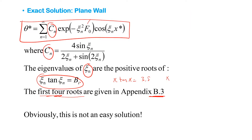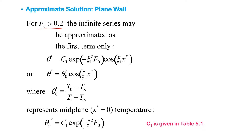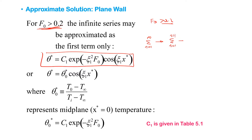Going back to the full solution: T-star is the normalized time and x-star is the normalized position. First, find the ζn values from the transcendental equation, then find the Cn coefficients. There is a special case: when the Fourier number is greater than 0.2, you only consider the first term of the infinite series — going from n=1 to infinity reduces to just n=1. This makes the analysis much simpler.